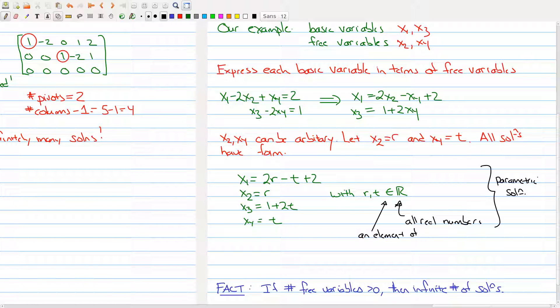So this is called a parametric solution. So it actually describes all solutions to our system. You can give me any two values, r and t, and then I can find x1 and x3 from that information. And those four numbers together will give me a solution to my system of linear equations.